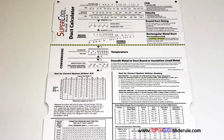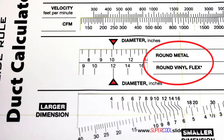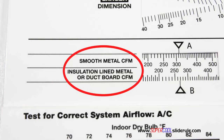Inside is packed with even more information. It performs sizing of both metal and flexible duct. It has the only direct reading conversion from smooth metal to insulation-lined metal we've ever seen. The majority of technicians have never been taught that if the insulation is on the inside of the ductwork, you cannot size it with a regular duct calculator.